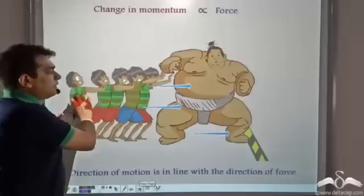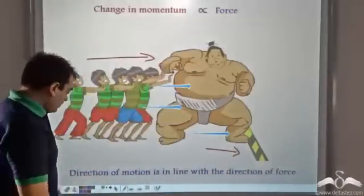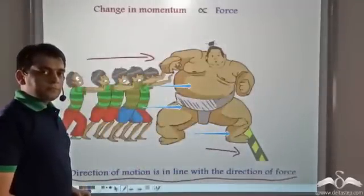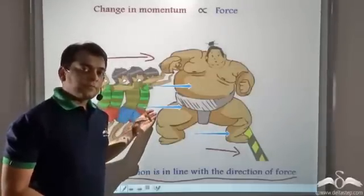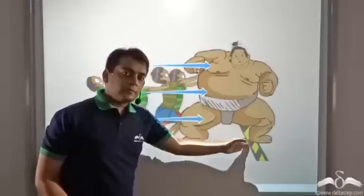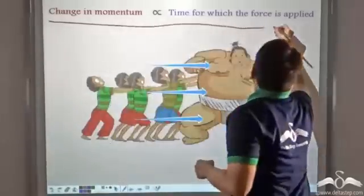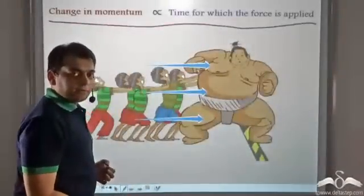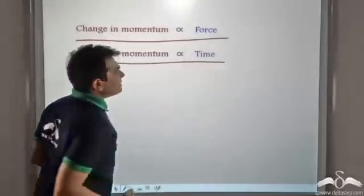Further, observe that when the boys were pushing the sumo wrestler in this direction, the sumo wrestler moved in this direction. Therefore, the direction of motion is in line with the direction of force. Now, these boys don't give up — they keep pushing the sumo wrestler continuously. And with that continuous effort, they are able to move the sumo wrestler beyond the line. So we saw that change in momentum is directly proportional to the time for which the force is applied. If the force is applied for a greater time, the change in momentum is greater.